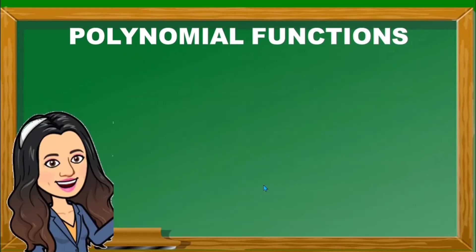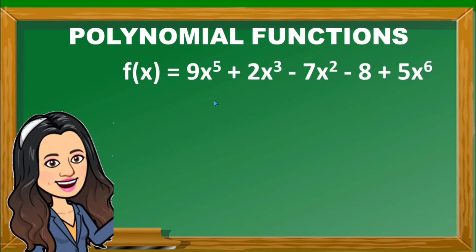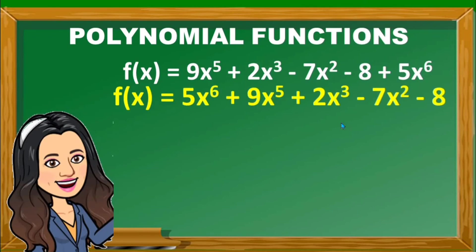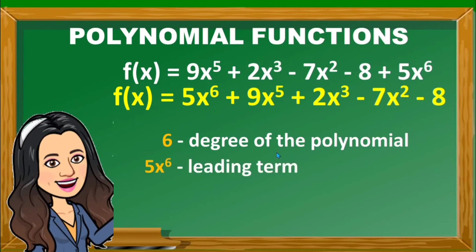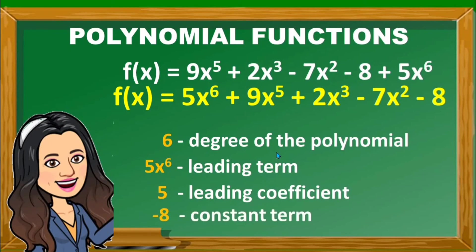Let us have another example. Given f of x is equal to 9x raised to 5, plus 2x cubed, minus 7x squared, minus 8, plus 5x raised to 6. You have to arrange this first in descending powers of x. That is equivalent to f of x is equal to 5x raised to 6, plus 9x raised to 5, plus 2x cubed, minus 7x squared, minus 8. Therefore, the degree of the polynomial is 6, the leading term is 5x raised to 6, the leading coefficient is 5, and the constant term is negative 8.